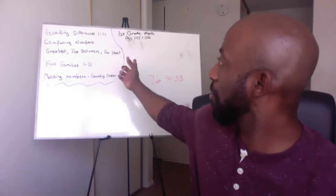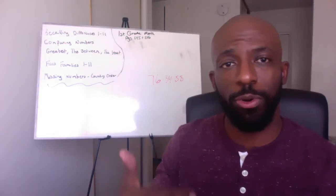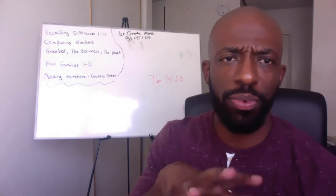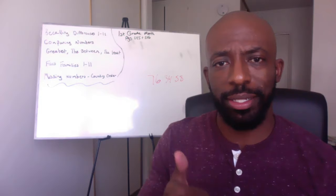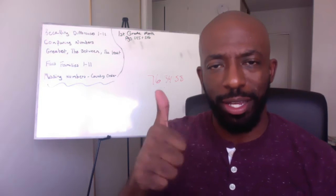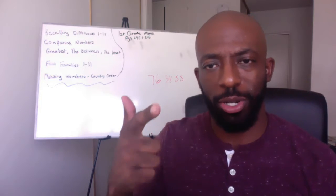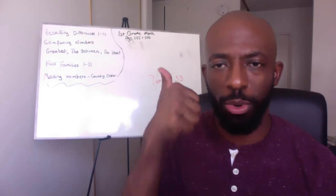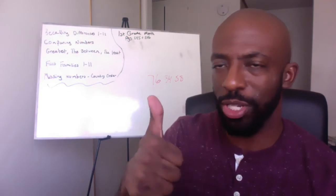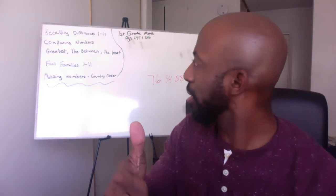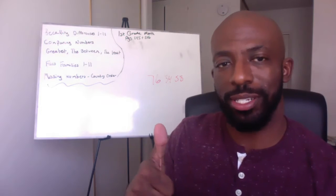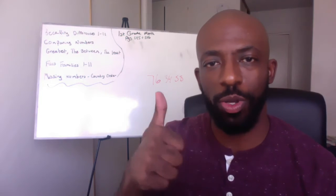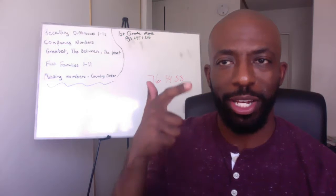Today's lesson is going to be coming from pages 245 and 246. What we are covering today — these are the things we're going to count about. Number one, we're going to be doing the differences — subtraction — recalling numbers between one and 11. So that's the first thing we're doing.